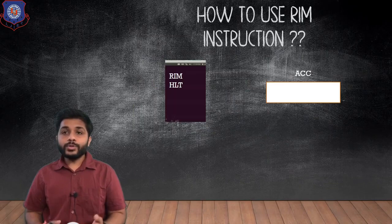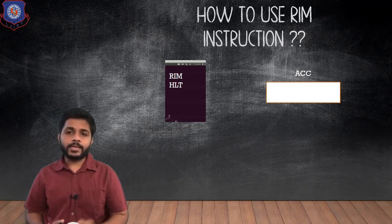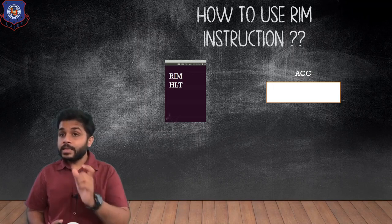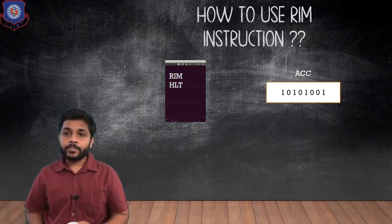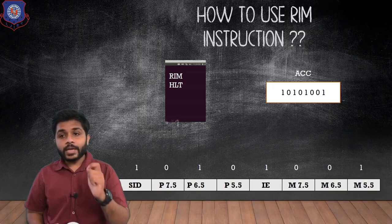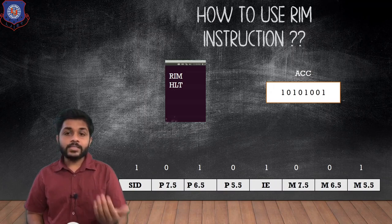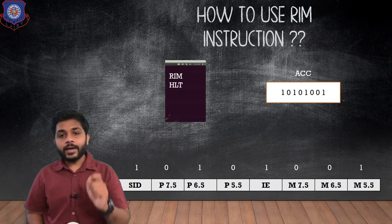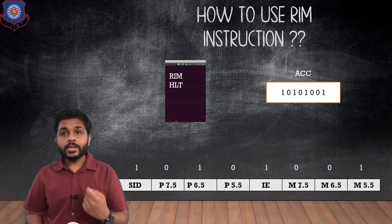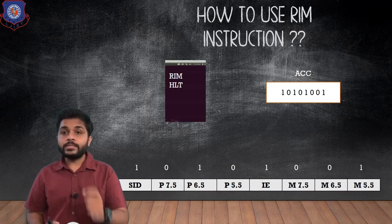Now let's see how to use the RIM instruction. In the assembler we have written a small program: RIM and HALT. When we give the RIM instruction, the accumulator receives some data. Comparing this data with the RIM format, we can understand which interrupt is masked, which interrupts are pending, and what the serial input data is. For example, if the SID bit shows 1, it means we are receiving 1 bit serially. So using RIM you can also receive serial data.